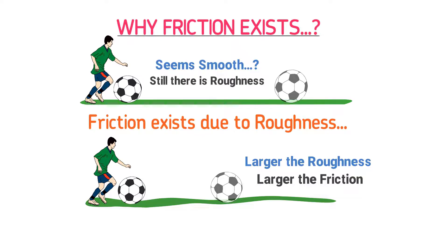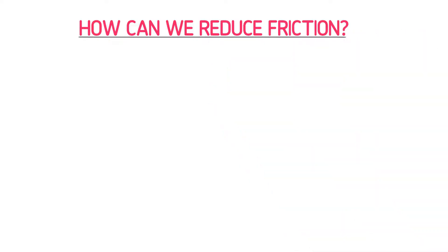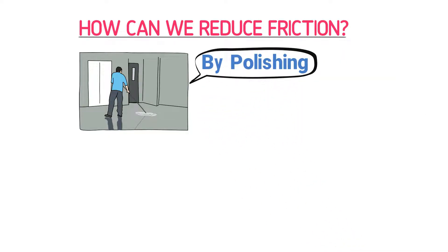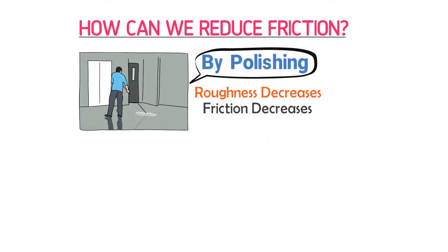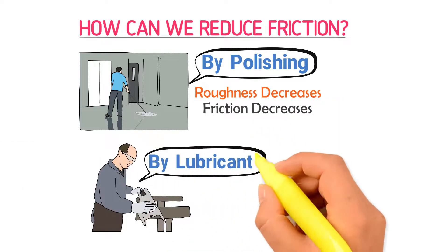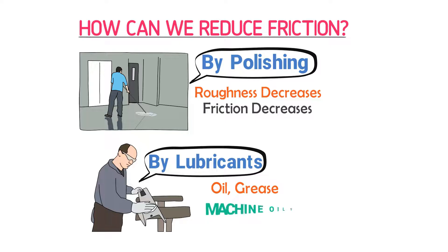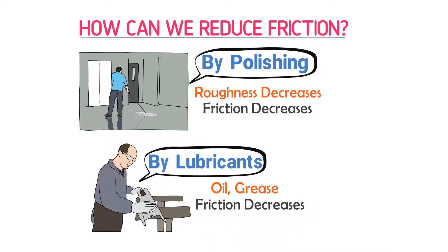Now, let me teach you the top three exam-oriented questions. The first question is: how can we reduce friction? We can reduce friction of any surface by three simple methods. Firstly, by polishing — if we polish the surfaces, their roughness decreases and they become smooth, so friction decreases. Secondly, by applying lubricants, meaning oil or grease. Remember that friction of certain liquids like machine oil is less than many solids, so applying lubricants can decrease friction.